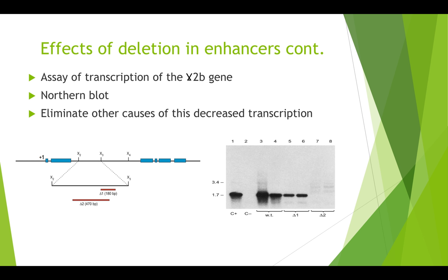The previous experiment was an assay at the protein level, reflecting both transcription and translation. But what if the decreased expression was due to causes other than enhancer activity? To measure transcription more directly, the scientists performed northern blots with RNA from cells transfected with normal and deleted gamma2b genes.